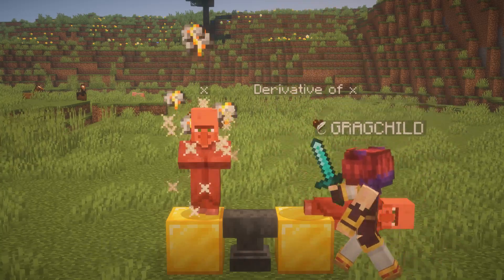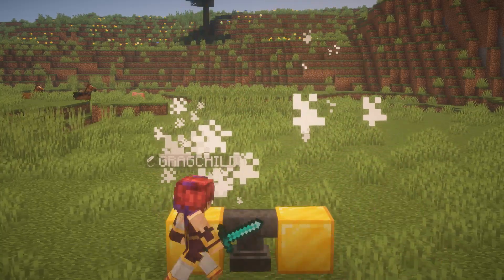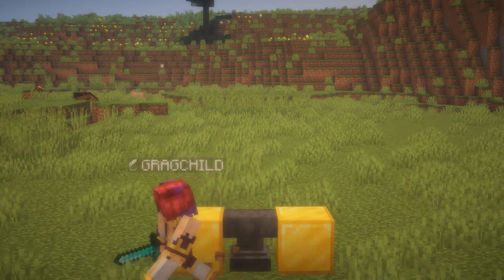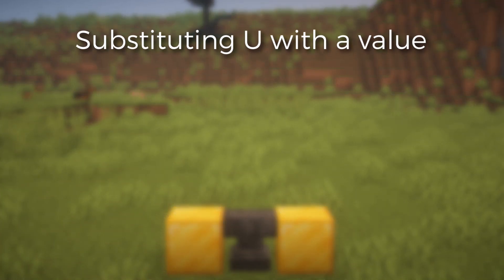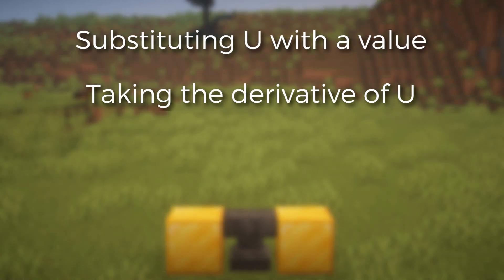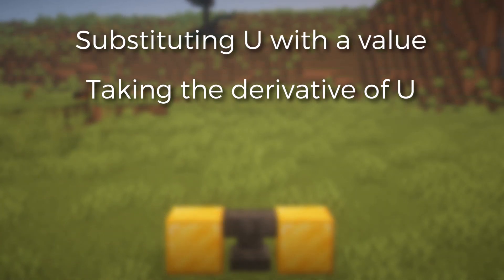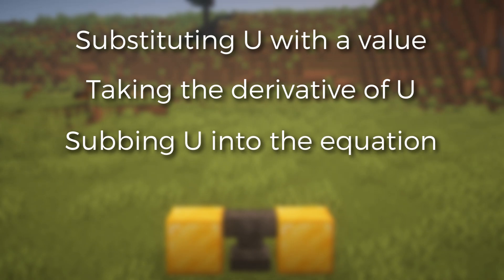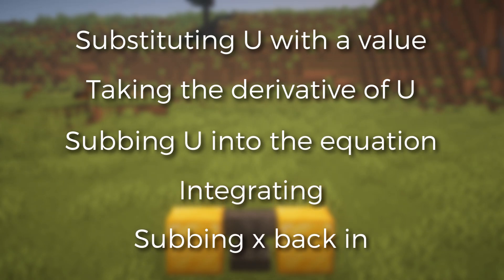Now let's move on to U-sub itself. U-sub has five different steps: first, substituting u with the value; then taking the derivative of u; then subbing u into the equation; then integrating; and then subbing x back in. To show the steps better, I will be solving the integral that the sad student was struggling with, and then at the end I'll show you another integral solved with U-sub once we've learned all the steps. So let's begin!